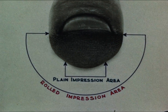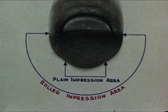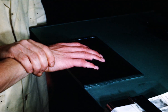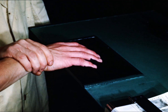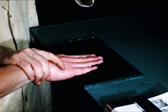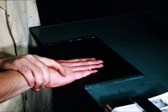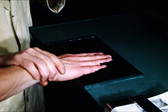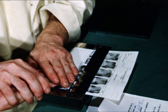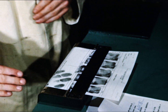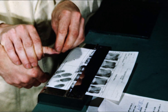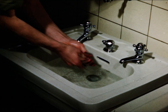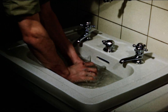The plane impression is approximately one-third the area of the rolled impression. Plane impressions are taken simultaneously, fingers extended and close together. Place the fingers lightly upon the ink slab, exerting even pressure. Lift the fingers from the slab and place them on the fingerprint form in their correct place. The thumb is inked in a similar manner and placed in its proper position on the form. Fingerprint ink can be easily removed by washing with soap and warm water.